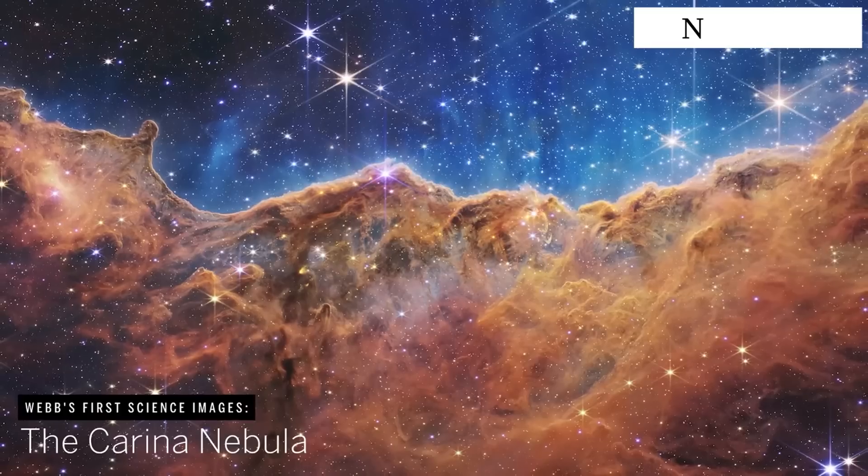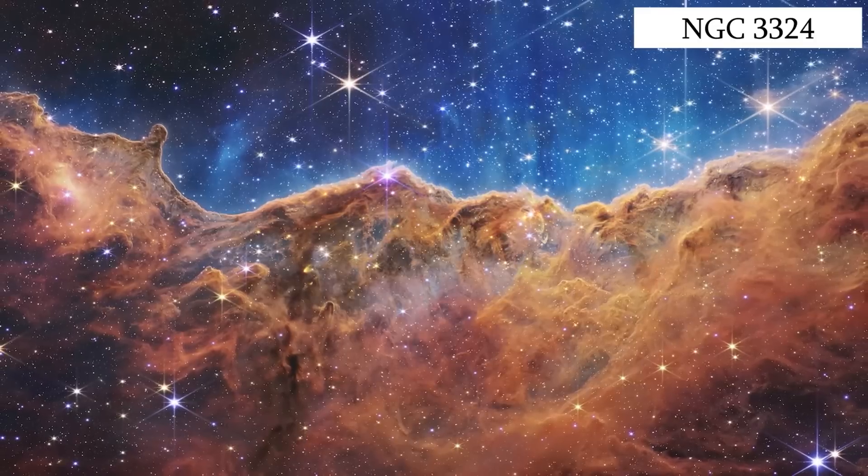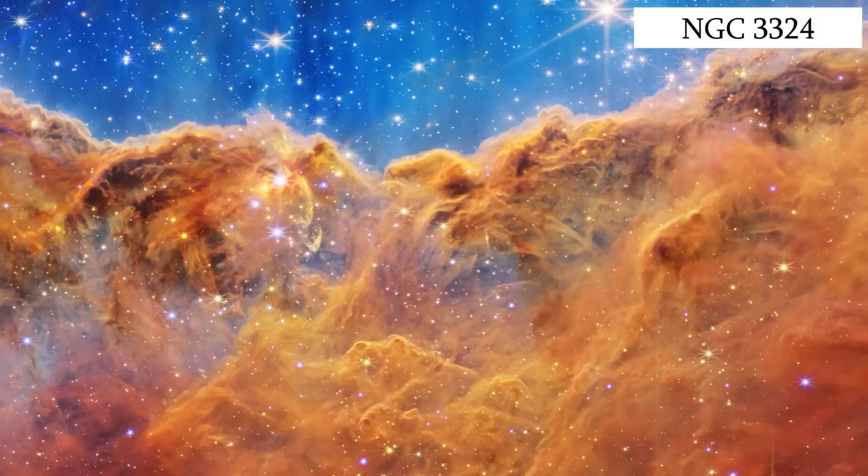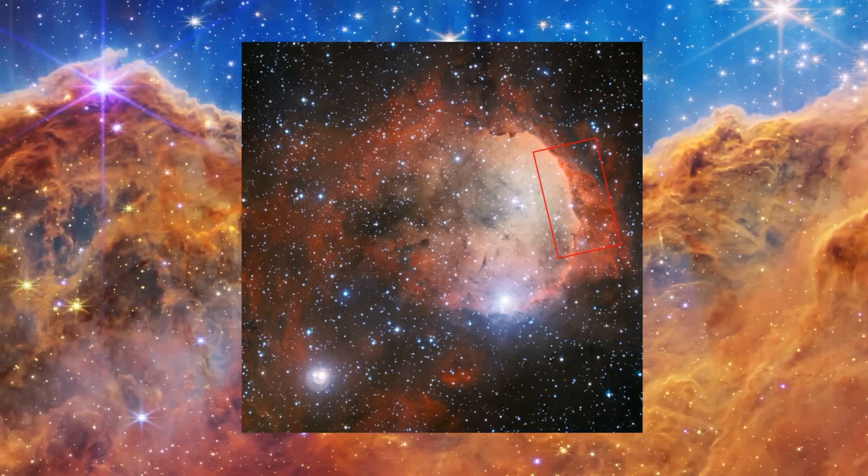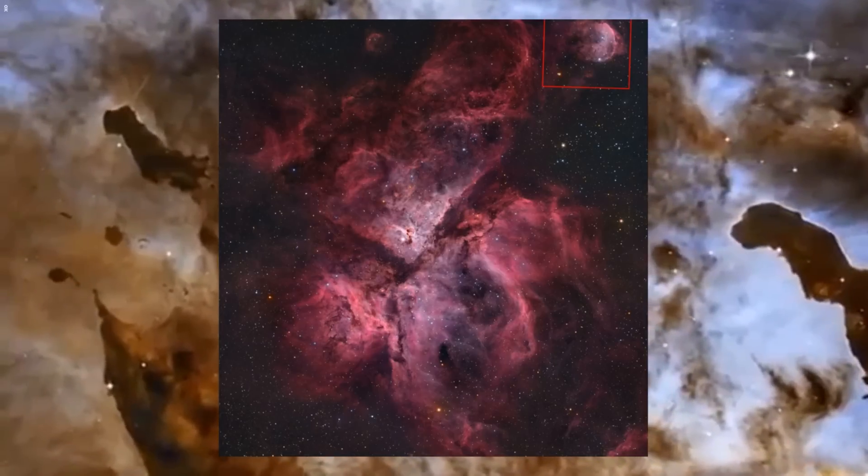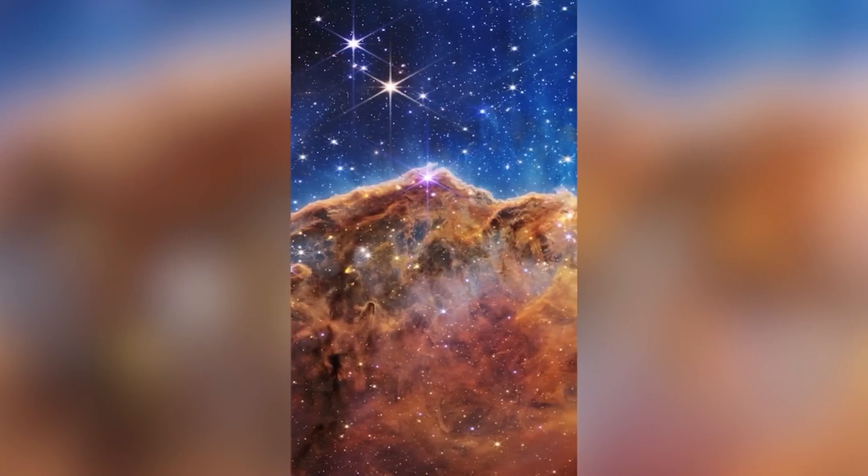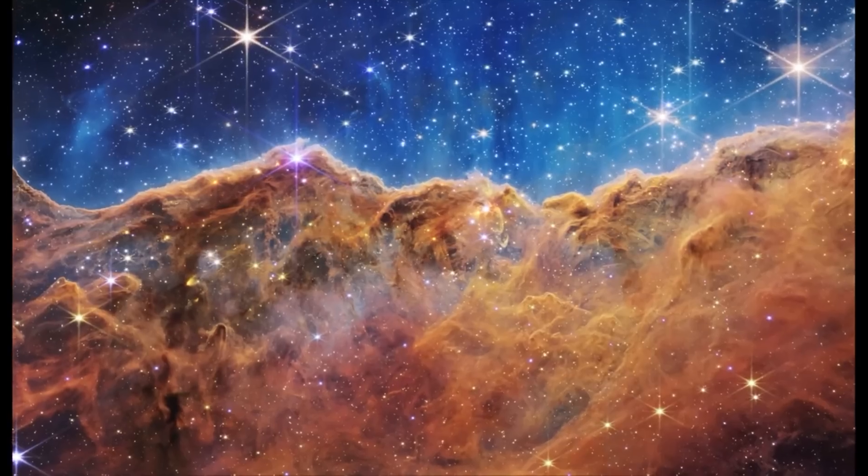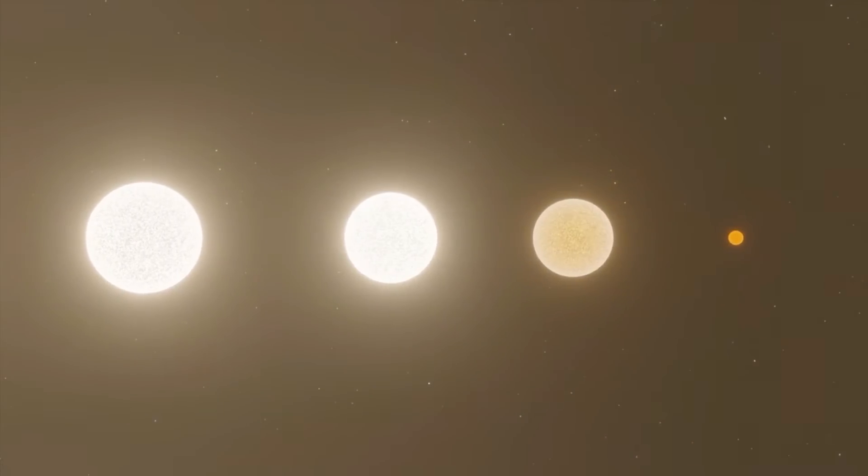First, let's take a look at the photo. In front of us is a star-forming region called NGC 3324, specifically its outermost part. NGC 3324 is part of the Great Carina Nebula. For the astronomers, this area is also known as the Cosmic Cliffs. The tallest rocks in this image are about seven light-years high, almost twice the distance from the Sun to the nearest star, Proxima Centauri.